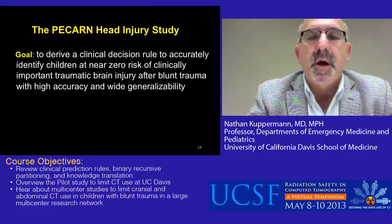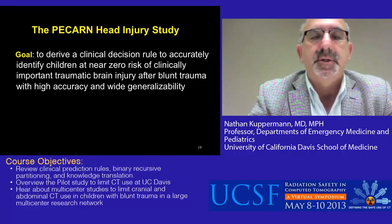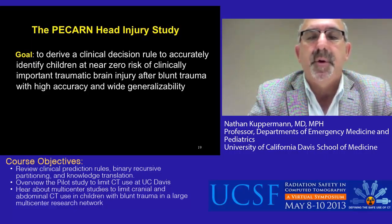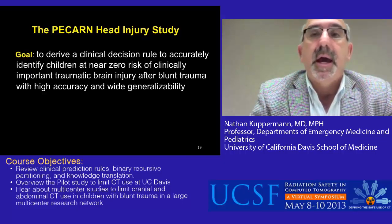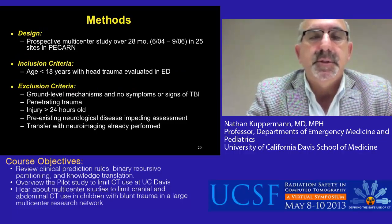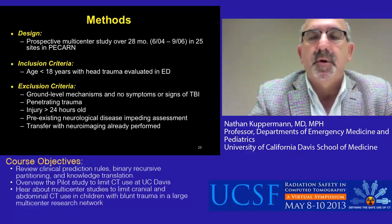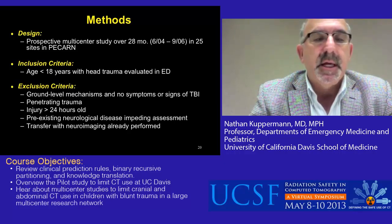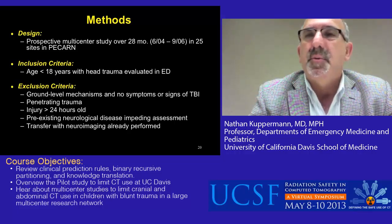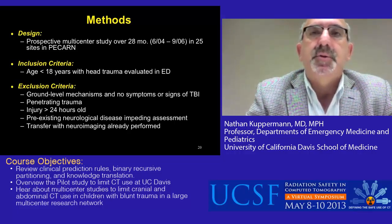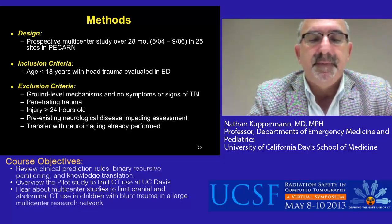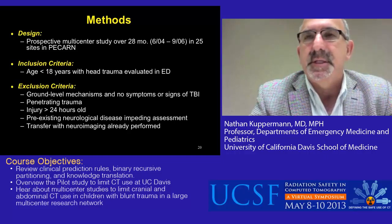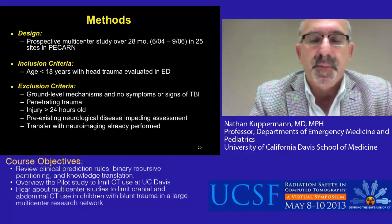The goal of this study was to derive a clinical decision rule to accurately identify children at near-zero risk of clinically important traumatic brain injury after blunt head trauma, with high accuracy and wide generalizability. The methods were very similar to the UC Davis study — prospective, conducted over two and a half years in 25 sites in PECARN. Inclusion criteria were children less than 18. Standard exclusion criteria applied, including exclusion of children with very minor mechanisms, injuries over 24 hours old, and pre-existing neurological disease that impedes assessment.